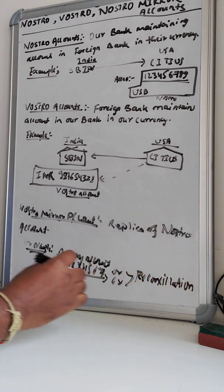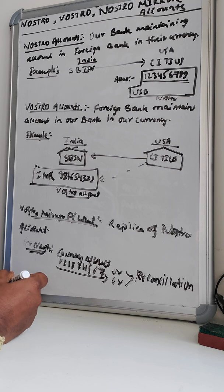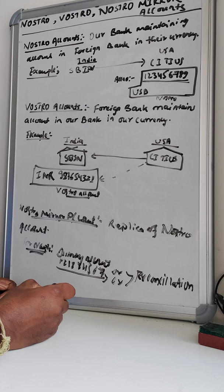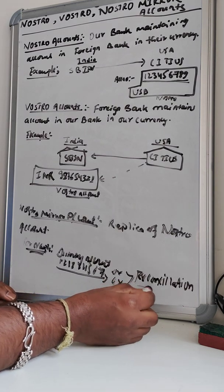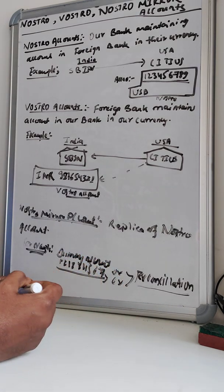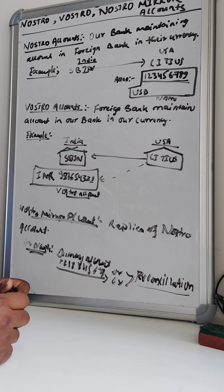At the end of the day, they use whatever amounts have been debited or credited for reconciliation purposes. The Nostro Mirror account is always used as a replica of the Nostro account — it is a mirror account of the Nostro, maintained at the bank side so they can understand how many debits and credits happened for the day. That is what we call reconciliation.